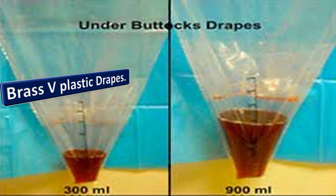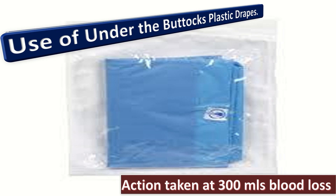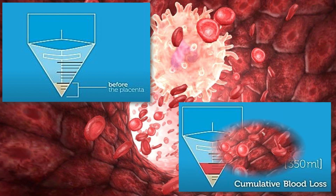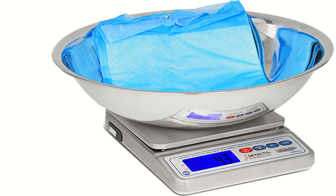Another method of assessing blood loss is the use of BRASSS-V drapes, which are calibrated under-the-buttocks drapes that fold out into a large sterile surface for delivery, allowing measurement of blood loss in calibrated pouches. When using under-the-buttocks plastic drapes for accurate measurement, action should be taken at 300 ml or even less when the woman is already anemic, rather than waiting for 500 ml. In the picture shown, the calibrated pouch contains 350 ml cumulative blood loss.